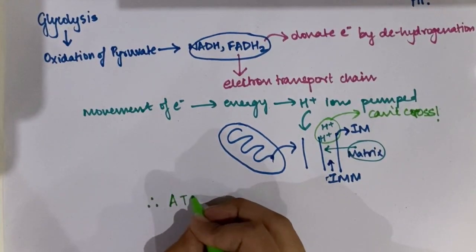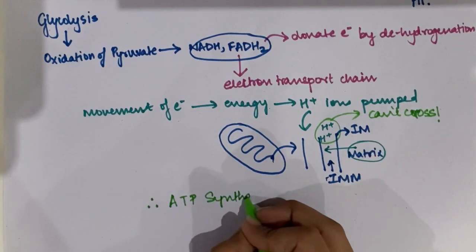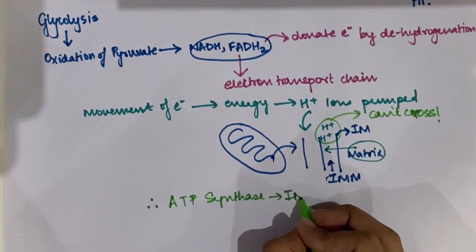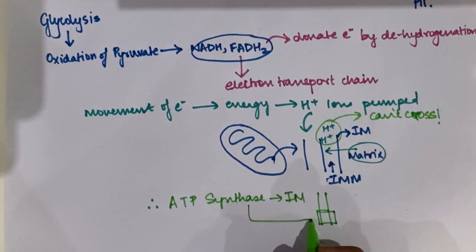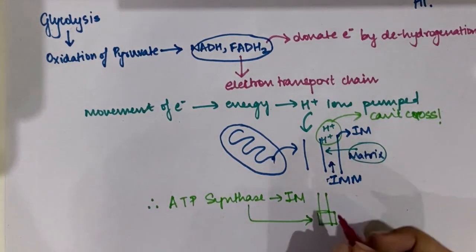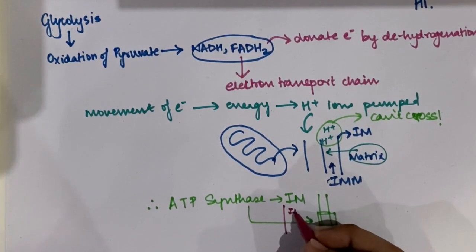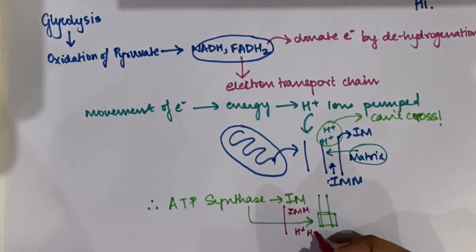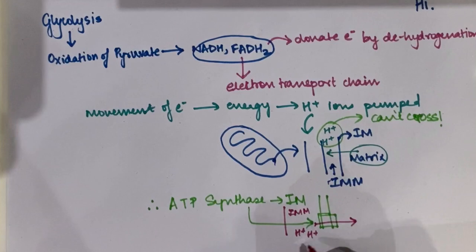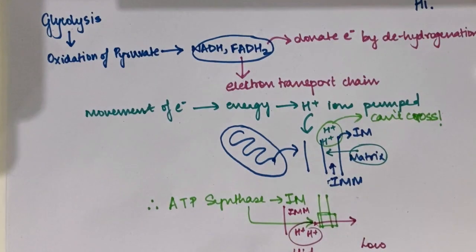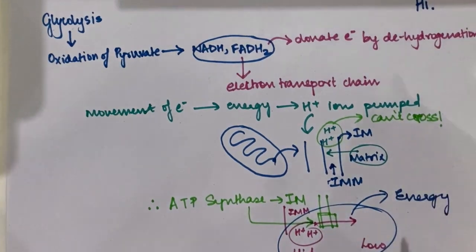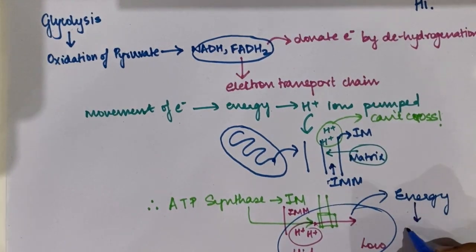This hydrogen gradient needs to be broken — hydrogen ions are supposed to move from the intermembrane space back to the matrix — but this cannot happen because the inner membrane is impermeable to ions. That is when a special complex known as ATP synthase comes into the picture. ATP synthase allows the movement of hydrogen ions back into the matrix, releasing energy in the form of phosphorylation of ADP to produce ATP, the energy currency of the cell.